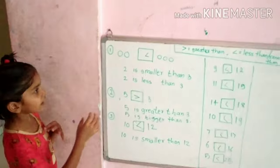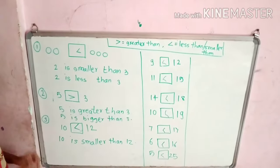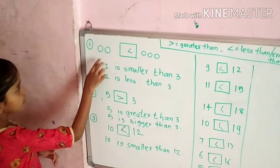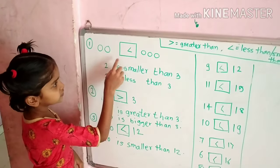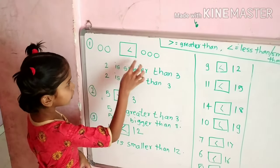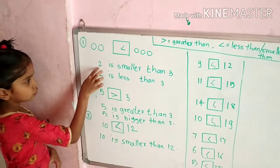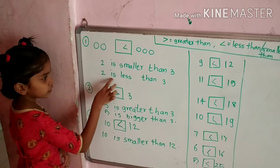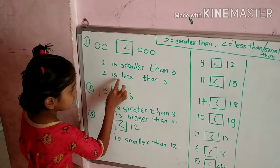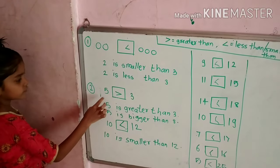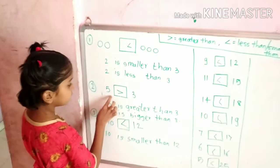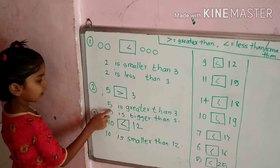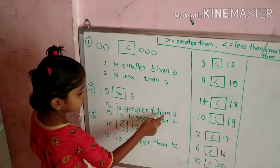Today I will teach you about greater than and smaller than. 2 is smaller than 3. 5 is greater than 3.